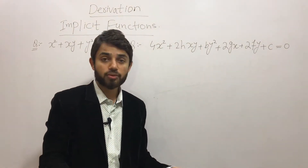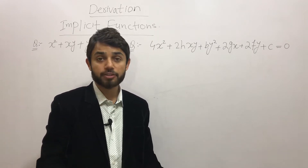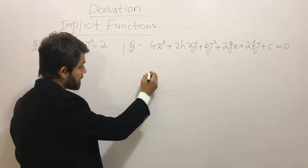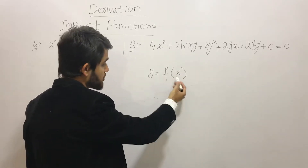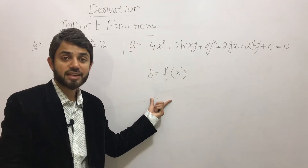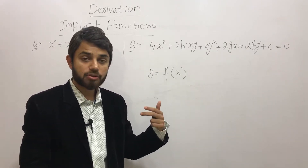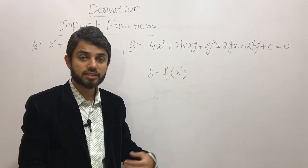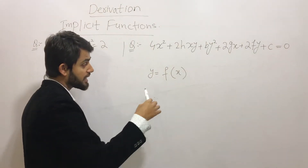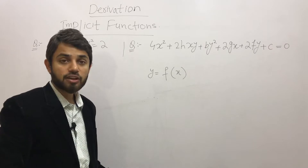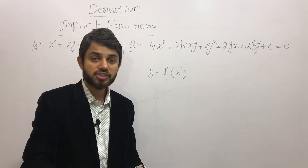We know that y is usually taken as the dependent variable and x as the independent variable, though it could be vice versa. When a dependent variable is written in terms of an independent variable — such as y = f(x) — these are called explicit functions, because we can clearly separate the dependent variable to one side and the independent variable to the other.